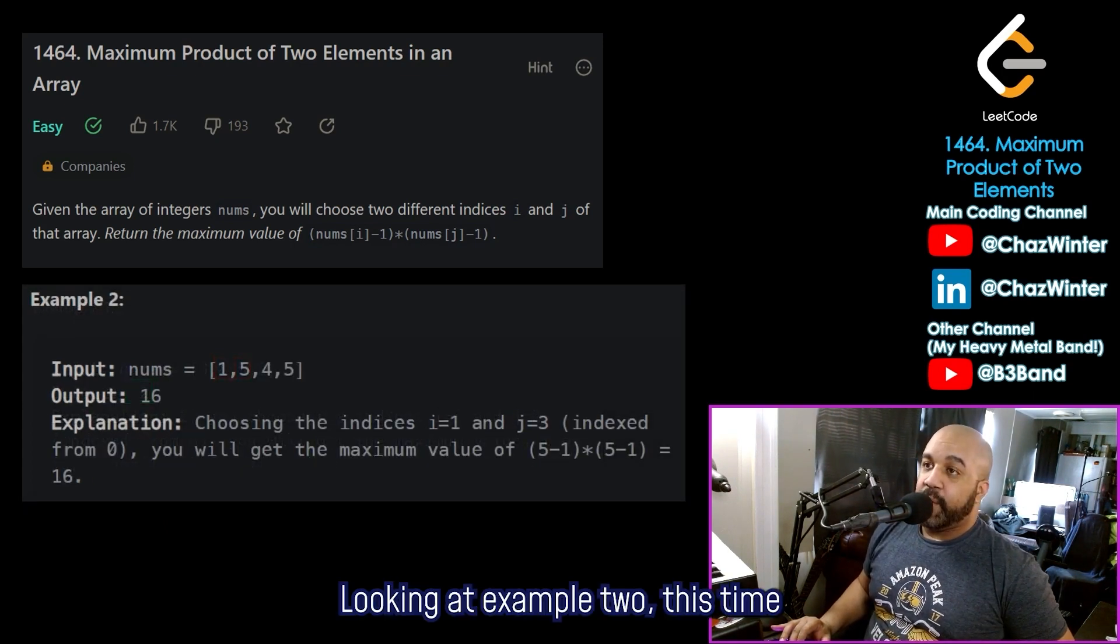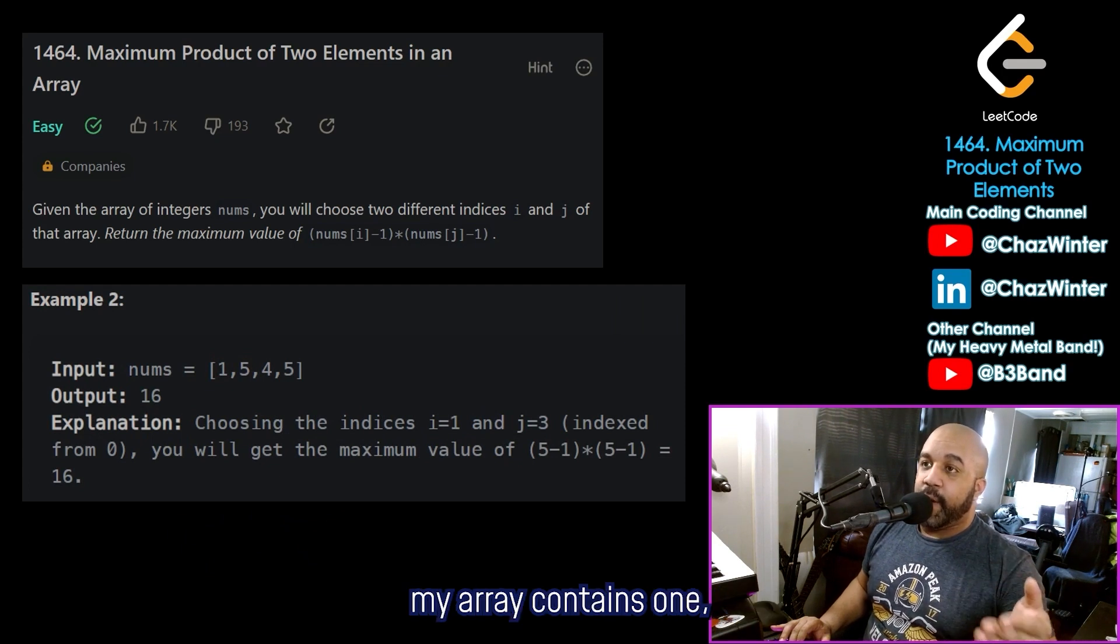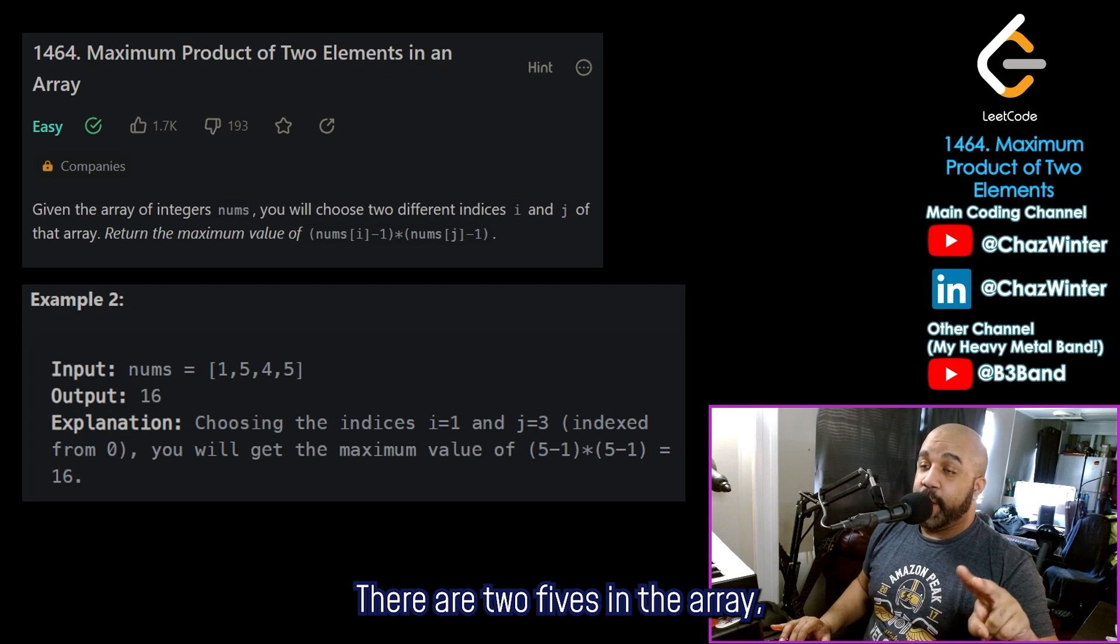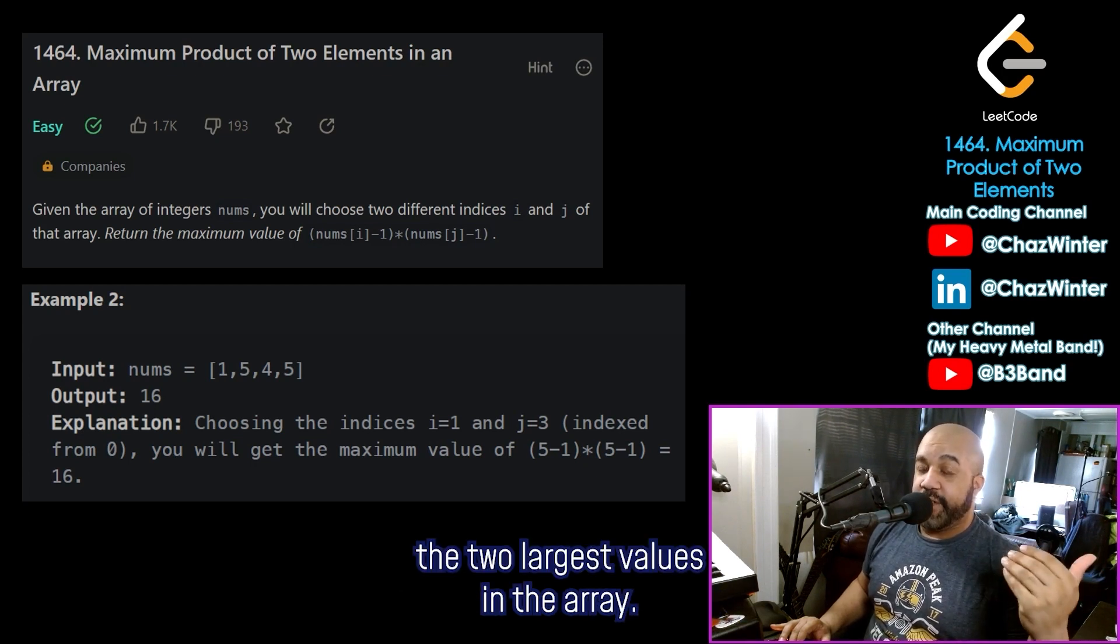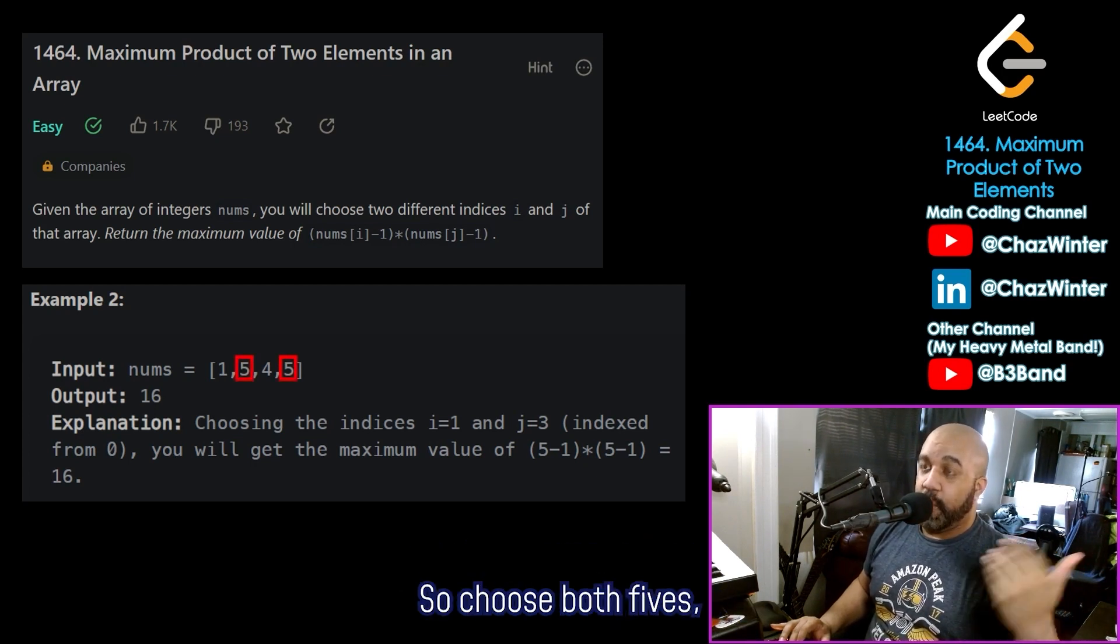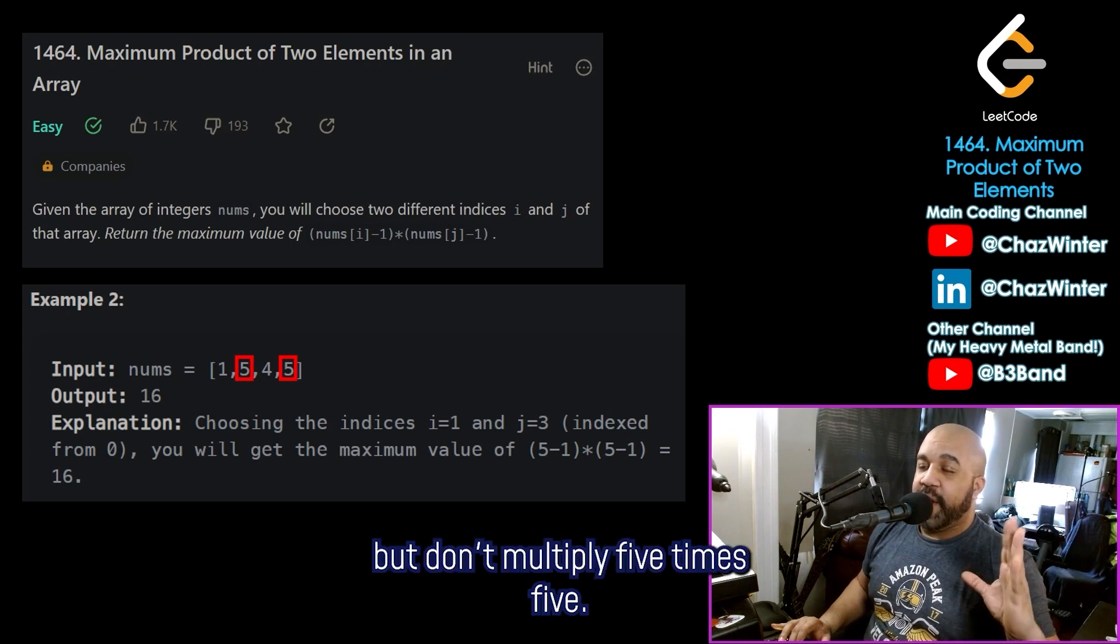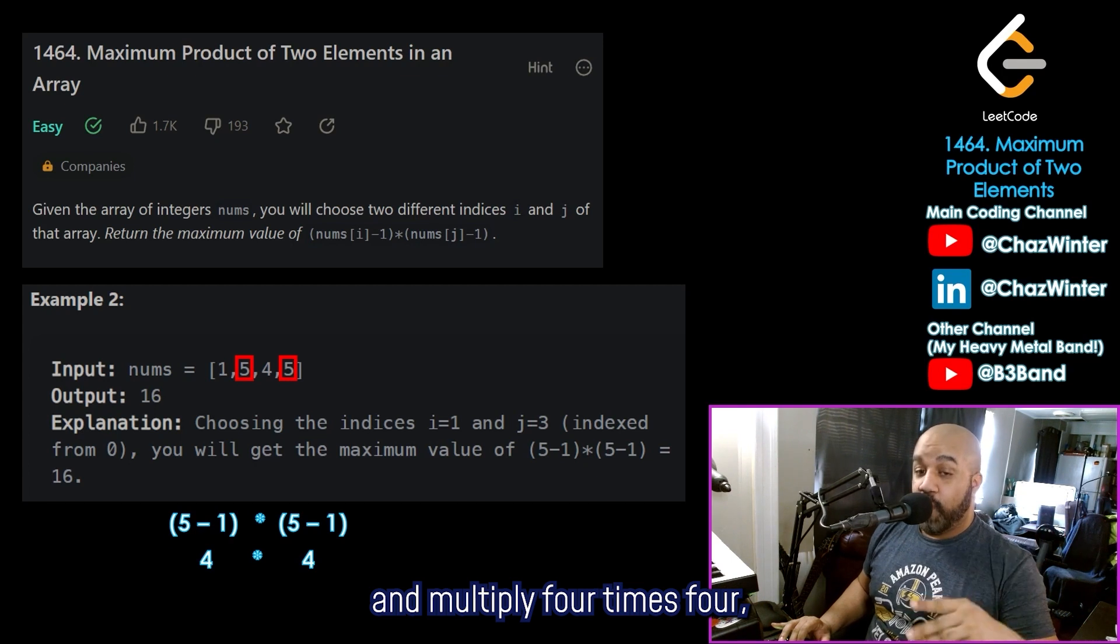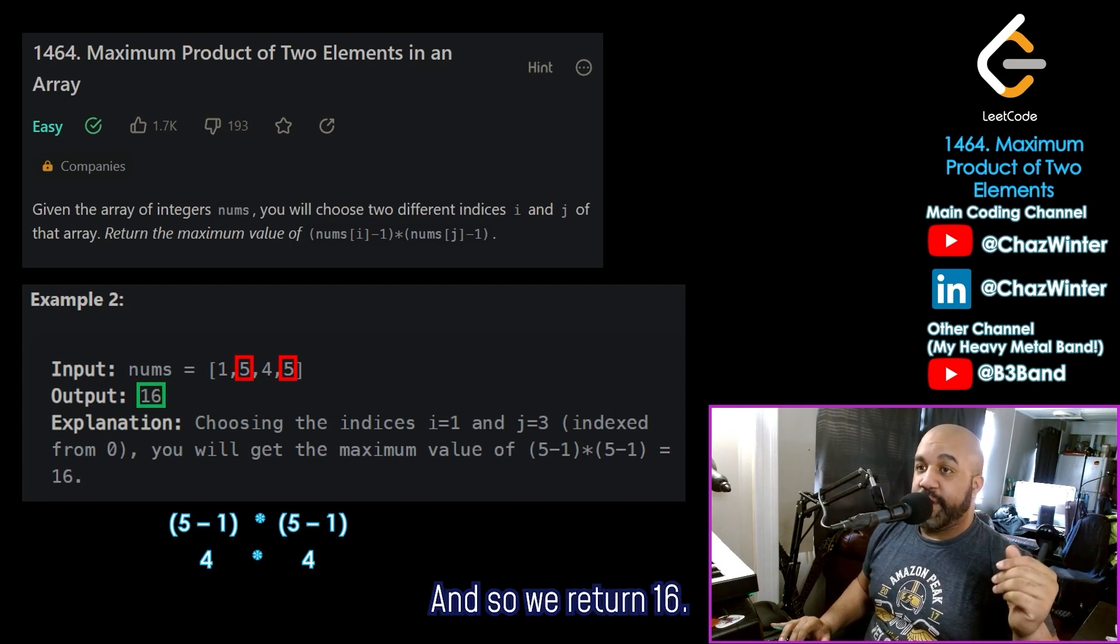Looking at example two, this time my array contains one, five, four, and five. There are two fives in the array, and they both represent the two largest values in the array. So choose both fives, but don't multiply five times five. Instead, subtract one and multiply four times four, which will be 16. And so we return 16.